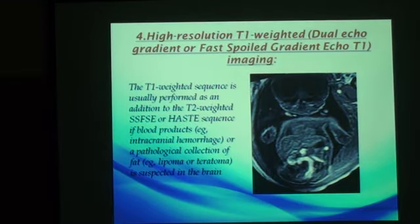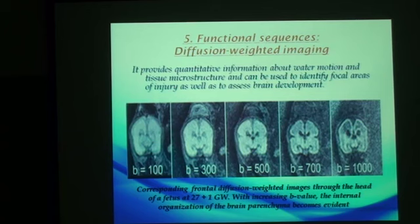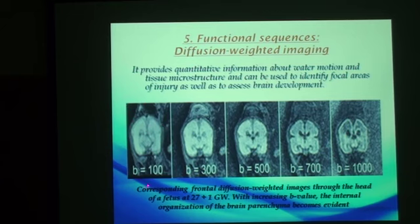Additionally, there is high-resolution T1-weighted imaging, used as a complement to the main sequences. If we are looking for any intracranial lesion such as lipoma or teratoma, the disadvantage of this sequence is a long acquisition time of 15 to 18 seconds for 15 to 18 images. We can also use functional sequences, the most important of which is diffusion-weighted imaging. It provides quantitative information about water motion and tissue microstructure that can be used to identify any focal area of ischemia. We take B values from 100 to 1,000; increasing the B value decreases image detail but increases sensitivity to detect ischemic changes.